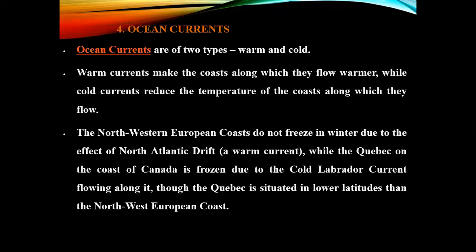The fourth factor is ocean currents. Ocean currents are of two types: warm and cold. Warm ocean currents make the coast along which they flow warmer, while cold currents reduce the temperature of the coast along which they flow. The north-western European coasts do not freeze in winter due to the effect of the North Atlantic Drift, a warm current, while Quebec on the coast of Canada is frozen due to cold currents.